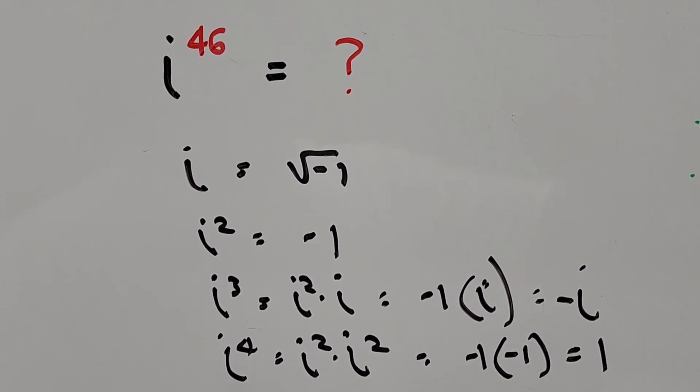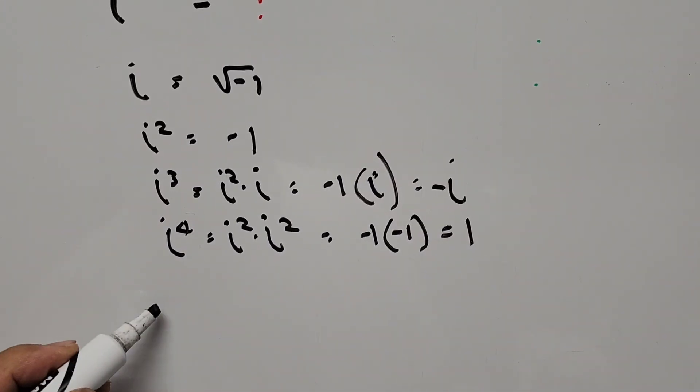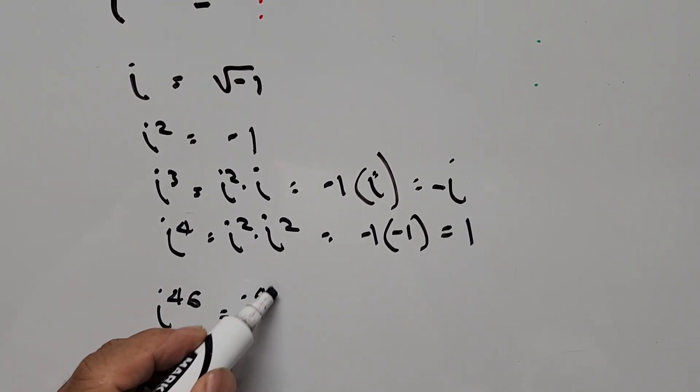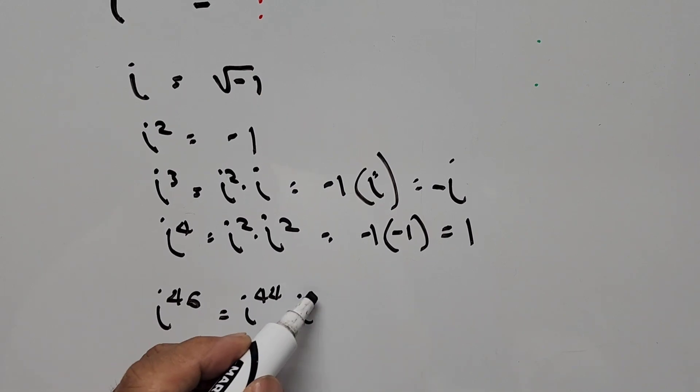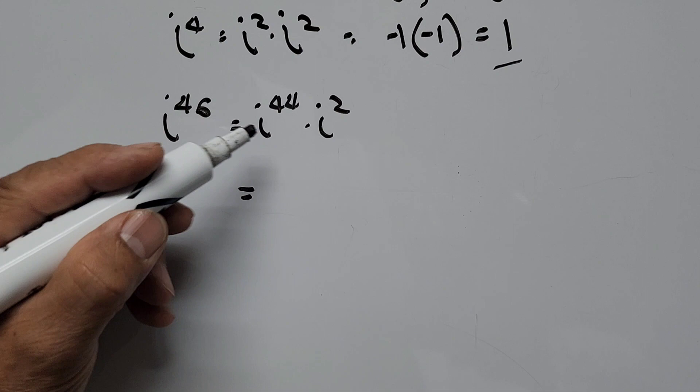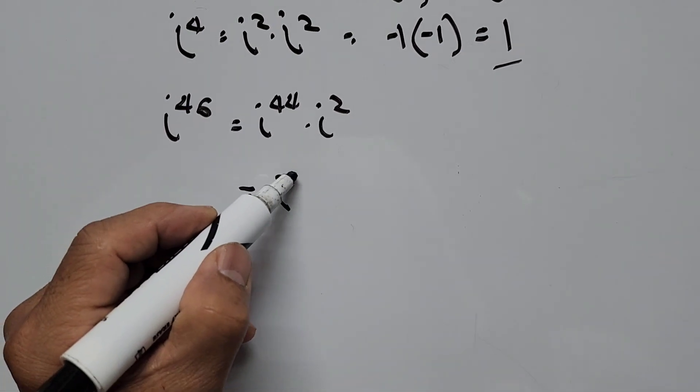So we have i to the 46 power is equal to i to the 44 power times i squared. This is equal to i to the 44 power written as i to the fourth power raised to the power of 11, times i squared.